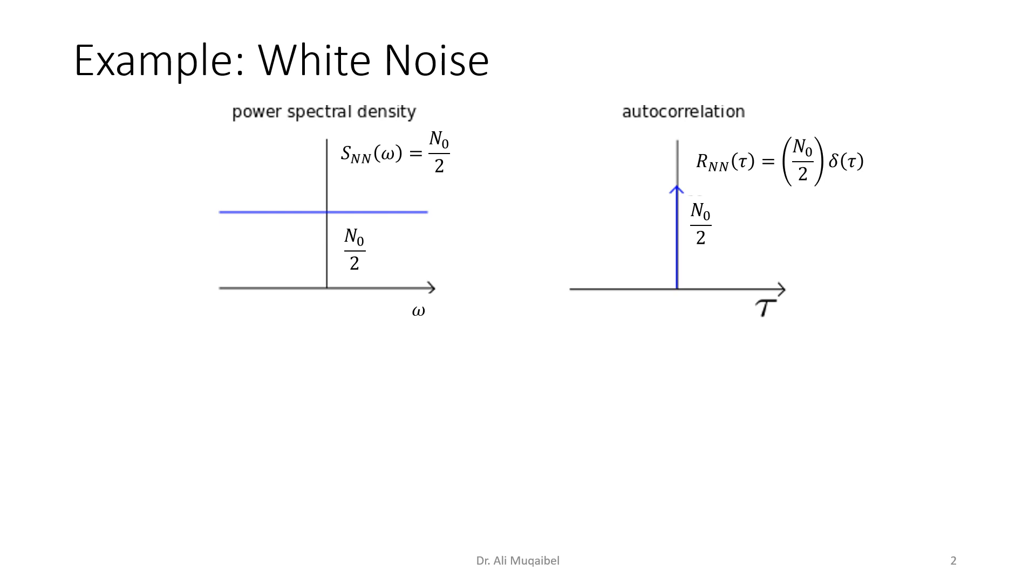White noise in the frequency domain has a constant amplitude, as you can see here. It's called white because different colors have different frequencies, and the white color is made of all different colors. If you mix all the colors, you get the white color.